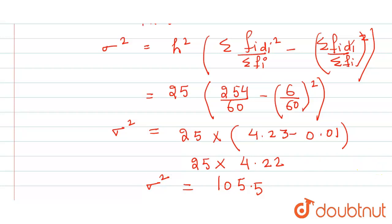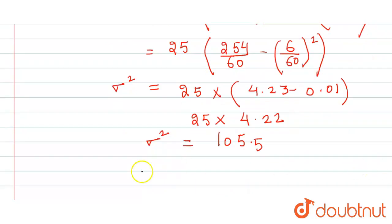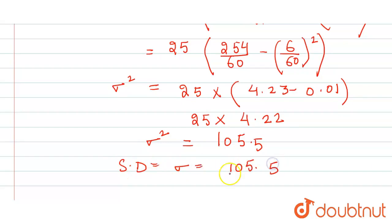Now to find the standard deviation, which is the square root of variance, denoted by σ: σ = √105.5 = 10.28. This is the value of the standard deviation.